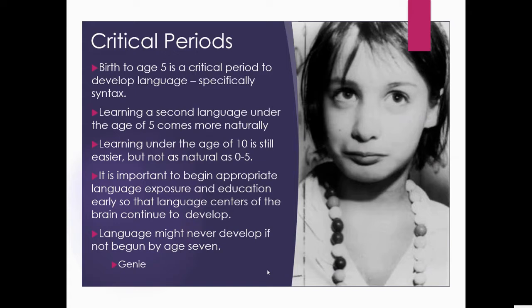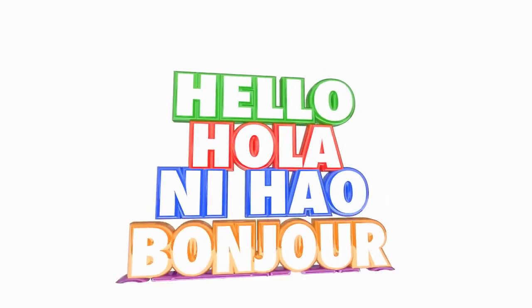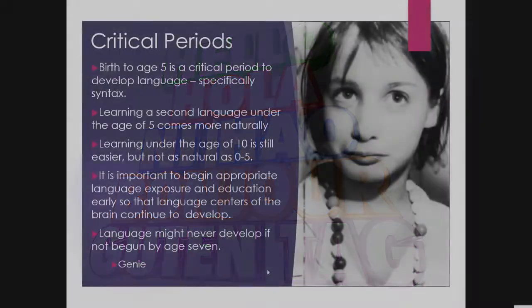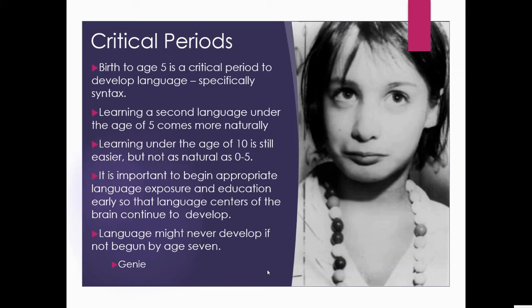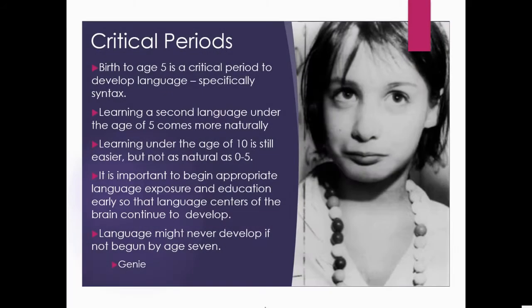Birth to age five is a critical period to develop language, specifically syntax. Learning a second language under age five comes naturally, and the child will pick it up bilingually. Learning before age 10 is still easier but not as effortless as in the zero-to-five window. It is important to begin appropriate language exposure early so that language centers of the brain continue to develop.